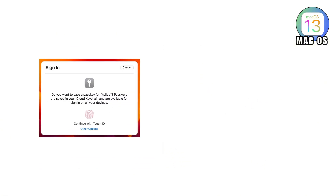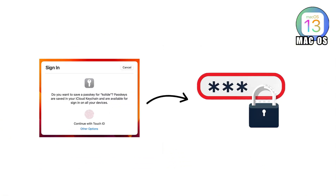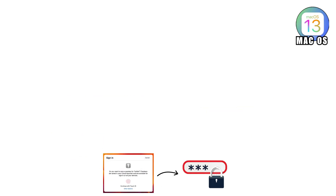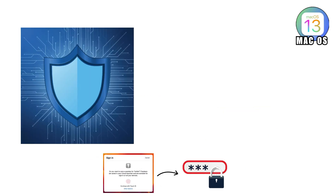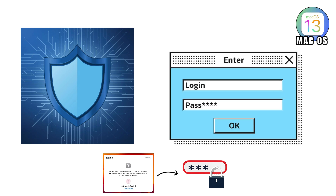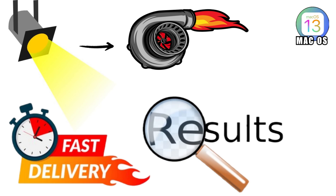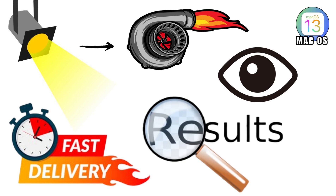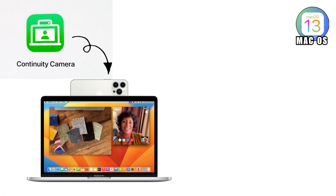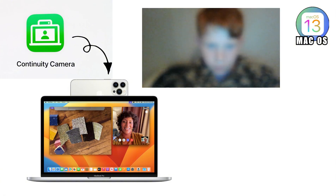Ventura also brought passkeys, which promised to kill passwords forever — until websites said 'cool idea, we're not ready,' leaving users stuck in a limbo of futuristic security and old-school login forms. Spotlight got turbocharged, delivering faster, smarter search results that could even preview files without opening them.